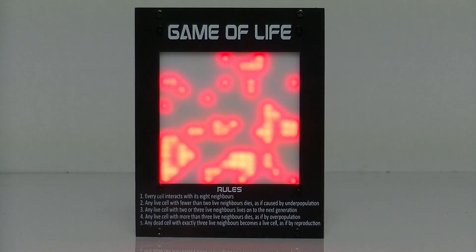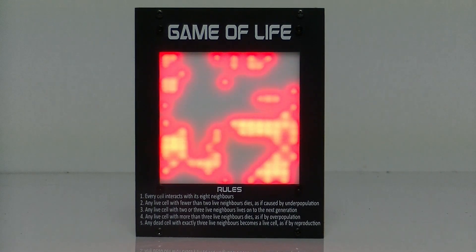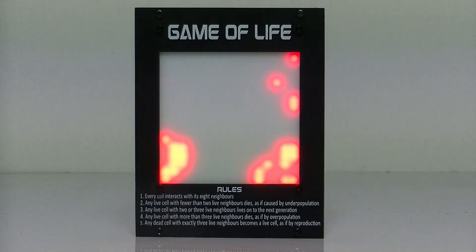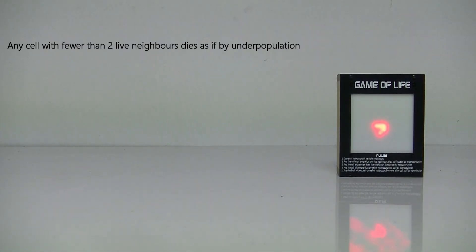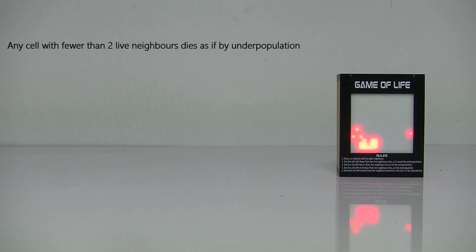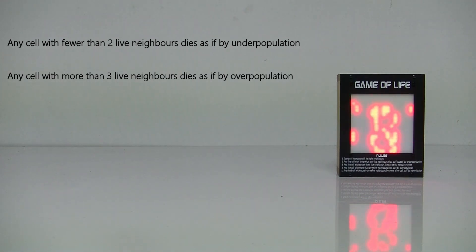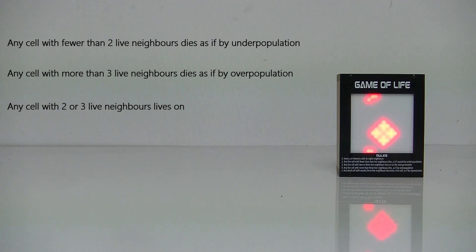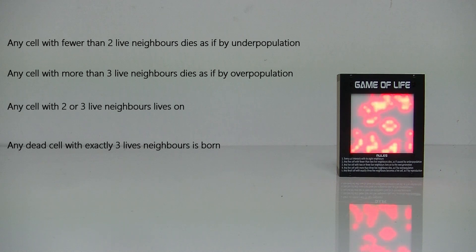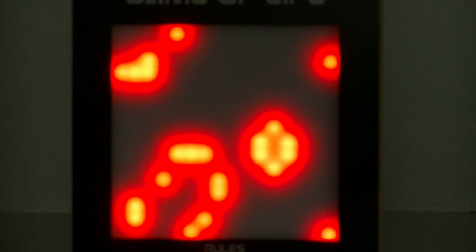The Game of Life is based on four simple rules where each cell interacts with its eight neighbors. First rule: any cell with fewer than two live neighbors dies, as if by underpopulation. Second rule: any cell with more than three live neighbors dies, as if by overpopulation. Third rule: any cell with two or three live neighbors lives on. And the last rule: any cell with exactly three live neighbors is born and becomes a live cell.